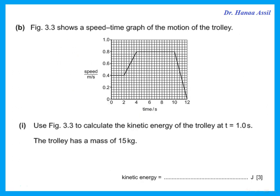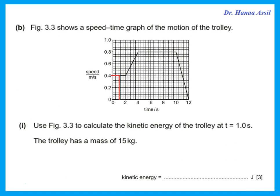Figure 3.3 shows a speed-time graph of the motion of the trolley. Use this to calculate kinetic energy at one second. The trolley has a mass of 15 kilograms. Kinetic energy is half mv squared. The speed at one second from the graph is 0.4. So kinetic energy is half × 15 × 0.4² = 1.2 joules.